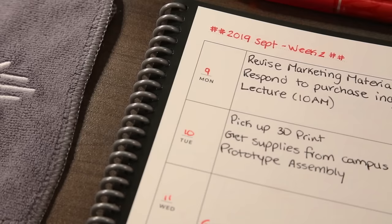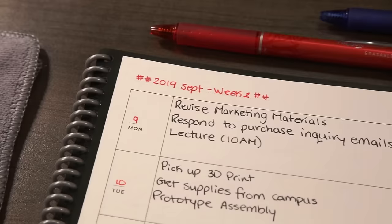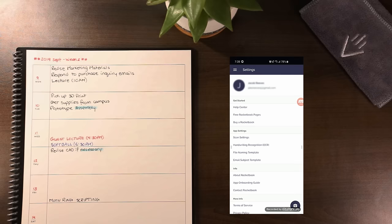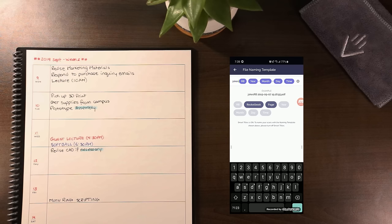Another tip is to expedite your uploading process by nesting your document titles inside of double hashtags. This is something I do regularly and even started integrating into my template titles. If you're particular about hashtags ruining the look of your notes, you could alternatively configure custom file naming and email subject templates in the Rocketbook app settings.